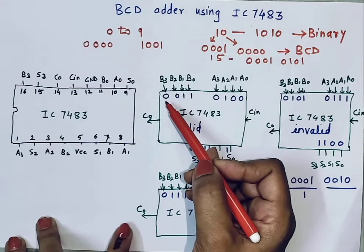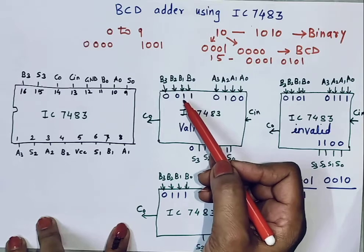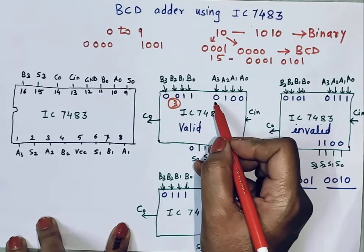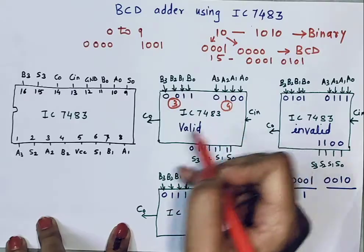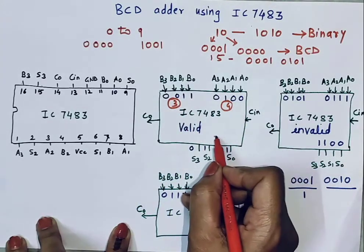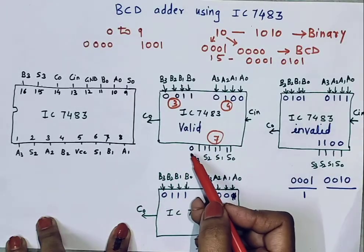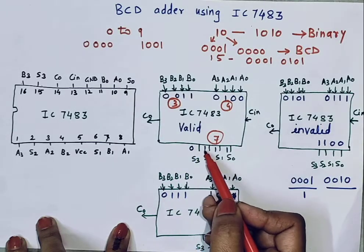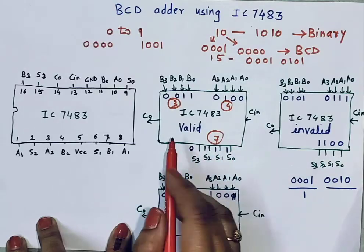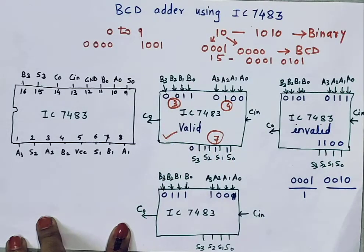Suppose my first number is 0011, that is 3, and my second number is 0100, that is 4. Addition of 4 plus 3 is 7. Since this is a binary adder it will generate binary addition 0111. So 0111 is a valid BCD number — this is valid BCD.